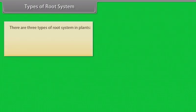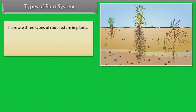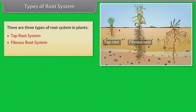There are three types of root system in plants: tap root system, fibrous root system, and adventitious root system.